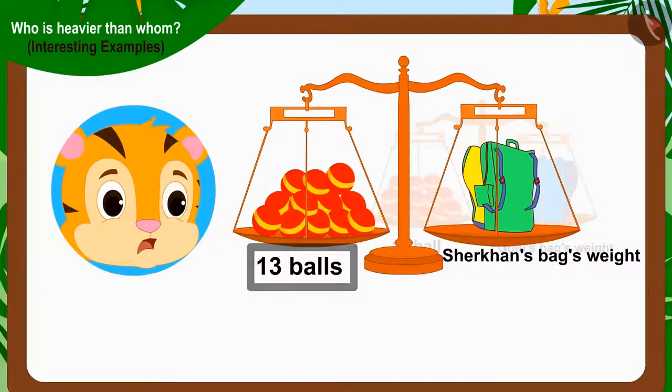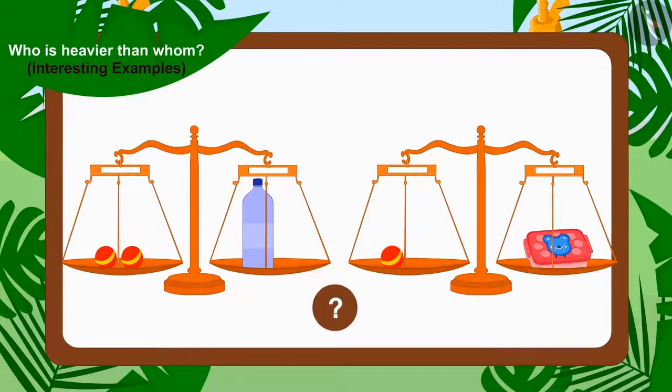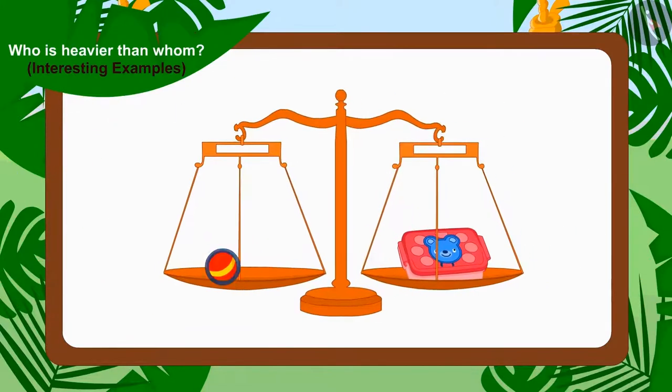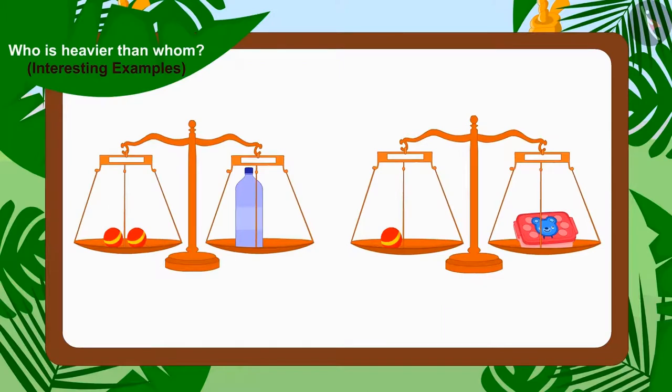Children, can you look at these scales and tell which of these two items is heavier? Yes, the water bottle weighs two balls and the tiffin box weighs one ball. So, the weight of the water bottle is more than the weight of the tiffin box.